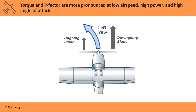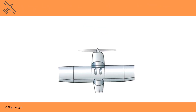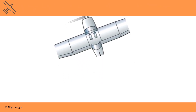Torque and P-factor are more pronounced at low airspeed, since there's less forward motion counteracting the yaw tendency; at high power, since the faster the propeller spins the greater these forces become; and at high angles of attack, because this leads to the greatest asymmetry and greatest P-factor in the thrust produced.